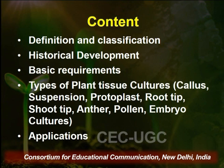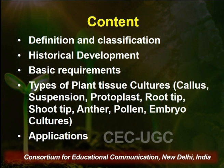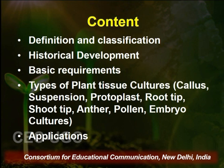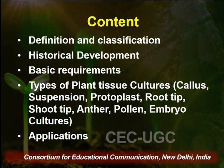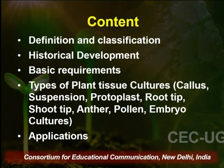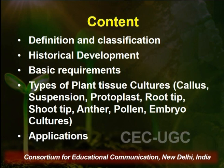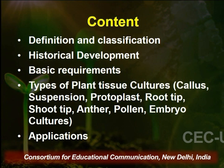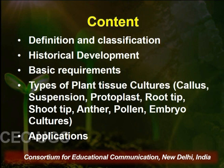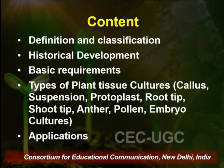Then I will discuss different types of plant cultures depending upon their growth pattern — either organized or unorganized. For unorganized growth tissue cultures we have callus and suspension cultures, whereas for organized plant tissue cultures we have root tip, shoot tip, anther, pollen, embryo, and so on. We will discuss these types in detail, and in the end I will be focusing upon the application part of this important technique.